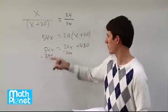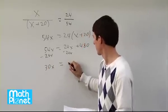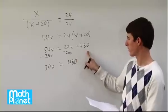What we get here if we have 54 minus 24 is just 30x, and that still equals 480, which is left over here.